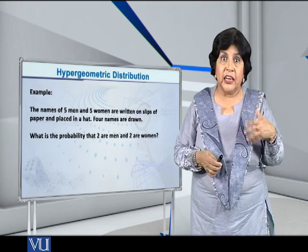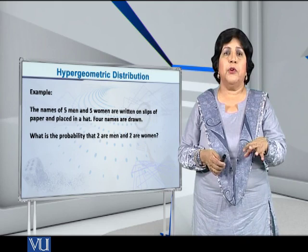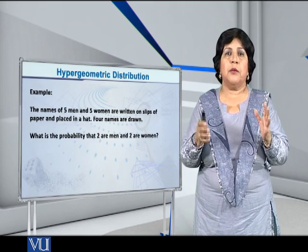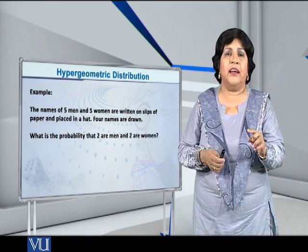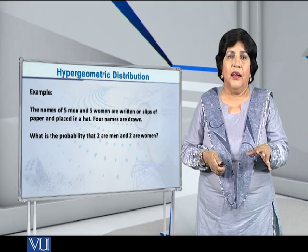Now, I need the third parameter of the hypergeometric distribution, which is K. And what is K? The number of successes in the population at the beginning of the experiment. So, initially we have ten names, and of these, five are names of men. Therefore, the number of successes is five, K is equal to five.